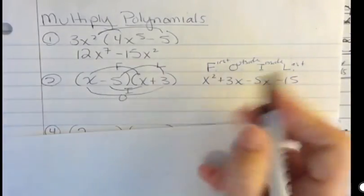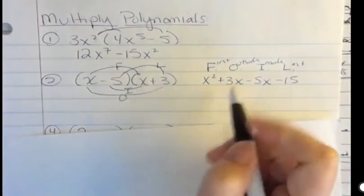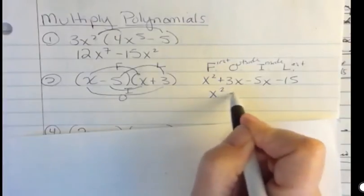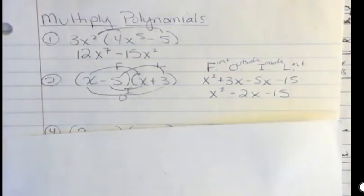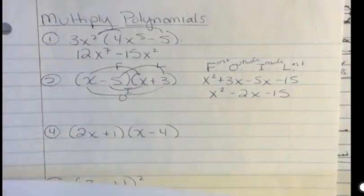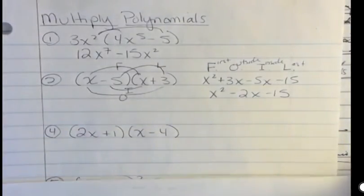Then I want to combine like terms if I can, and I can here. So I'm going to say x squared minus 2x minus 15. Notice I don't need like terms to multiply, but I do need like terms to add. That's as far as I can go.